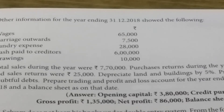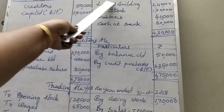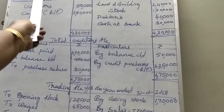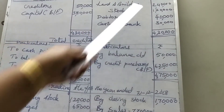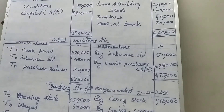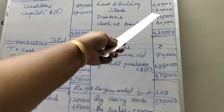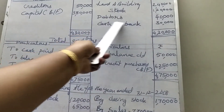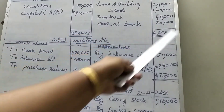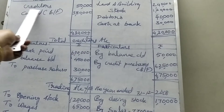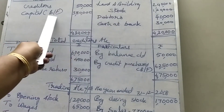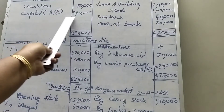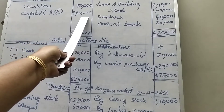Now we will look at the board. Statement of affairs — liability side and asset side. All the opening balances: land and building 2,40,000; stock 1,20,000; debtors 40,000; cash at bank 30,000. Creditors opening balance is 50,000. Find out the balance — that will be the opening capital. Capital is 3,80,000.